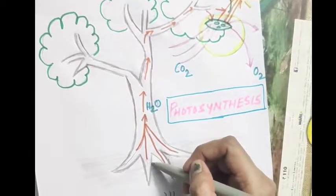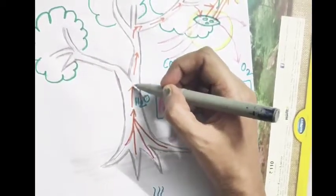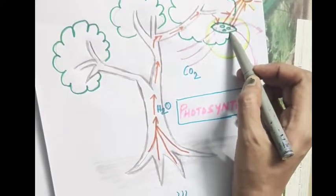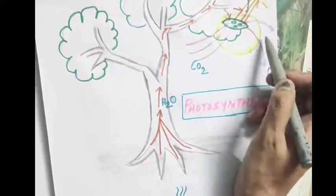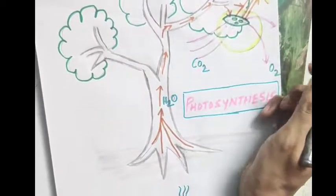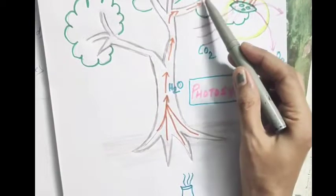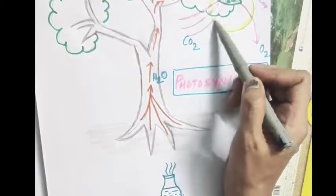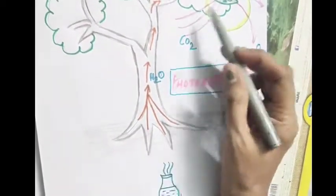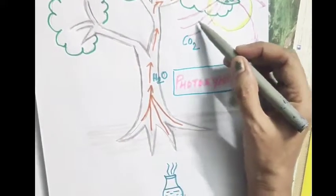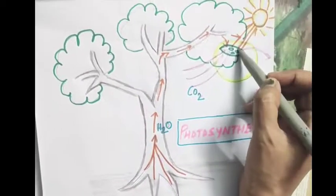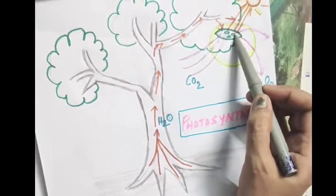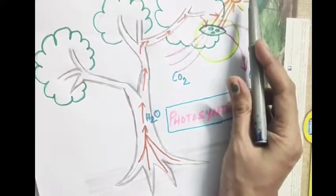The water and minerals move up towards the different parts of the plant and reach up to the leaves. Here I have tried to magnify a single leaf to show what is happening during photosynthesis. The water reaching the leaves is used up in the process of photosynthesis along with carbon dioxide, which is already present in the atmosphere, in the presence of sunlight and chlorophyll.